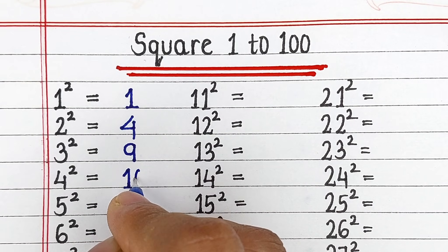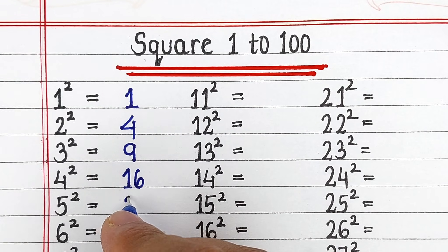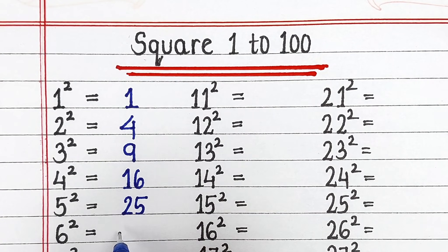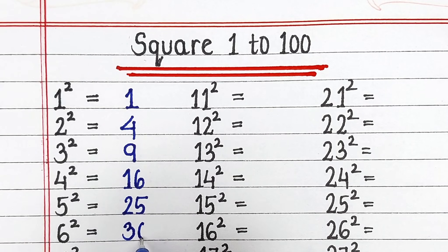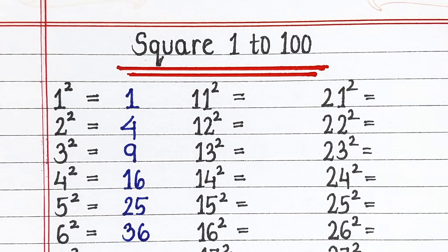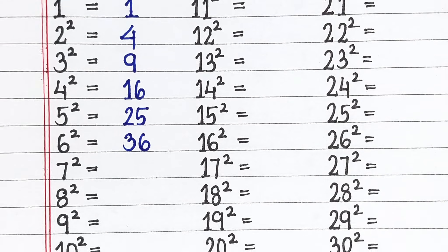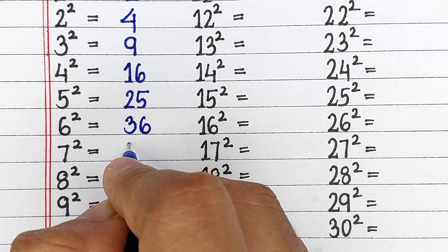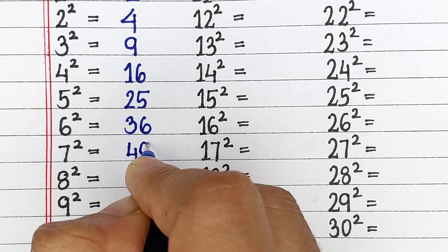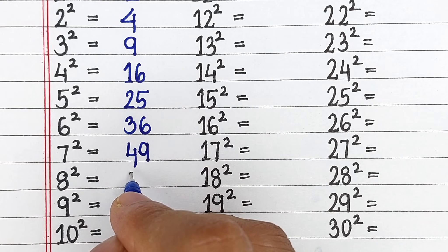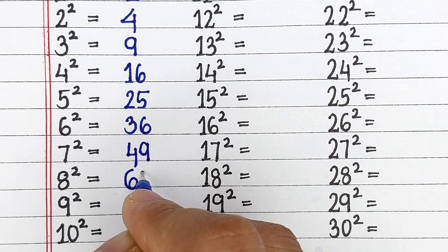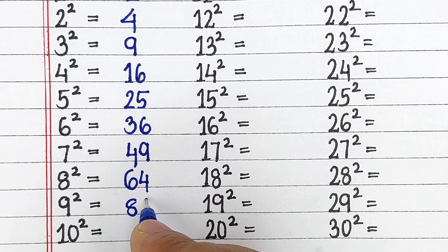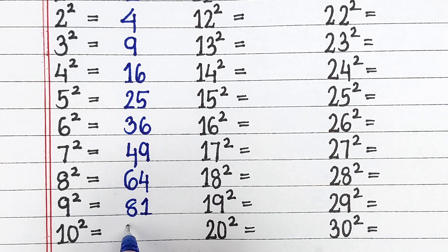Let's start. Square of 1 is 1, square of 2 is 4, square of 3 is 9, square of 4 is 16, square of 5 is 25, square of 6 is 36, square of 7 is 49, square of 8 is 64, square of 9 is 81, square of 10 is 100.